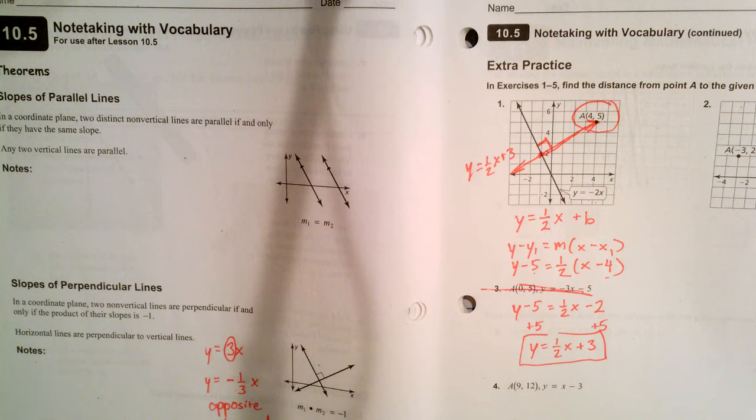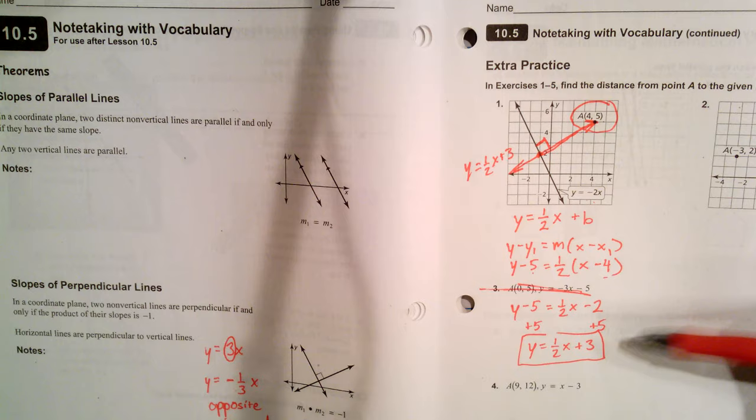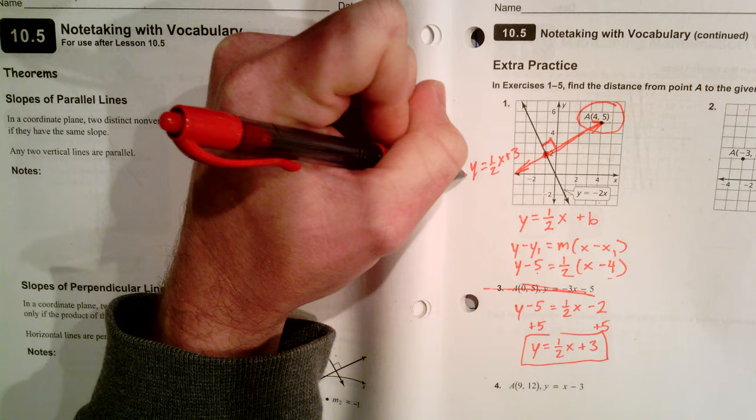Hi, we're back in 10.5 part 2 of my video on how to find the distance from a point to a given line. What we found so far was the equation of the line that is perpendicular to the given line—here is our given line—that passes through the given point. And you can find all those steps in my last video.